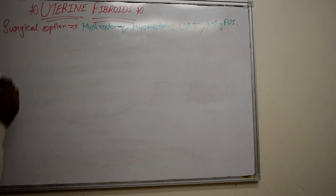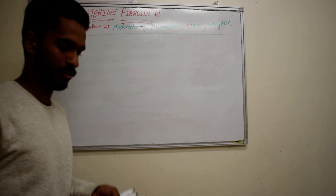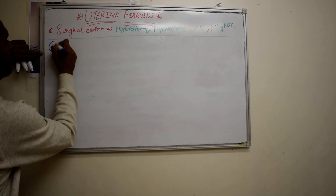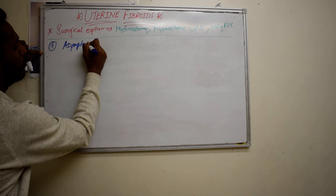We'll discuss which surgery should be done in which case. Suppose first we have an asymptomatic patient of fibroids. In this case, we can give the drugs or just wait and keep the patient under supervision.